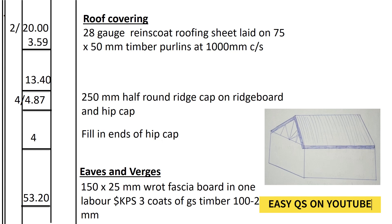We go to the hip cap. The hip cap shall be equal to the length of the hip rafters. The length of the hip rafters is 4.87 meters. We have four hip rafters, so four times 4.87.